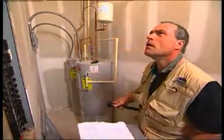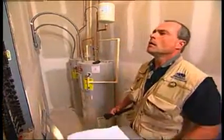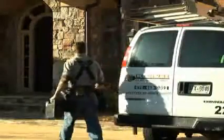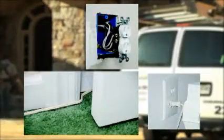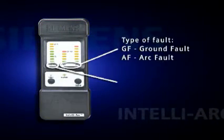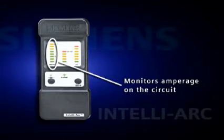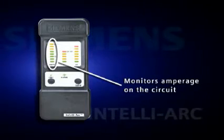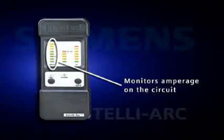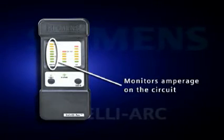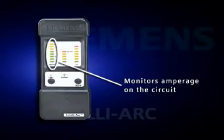Arc faults are often intermittent, which can make troubleshooting a branch circuit very difficult. In these cases, it is important to determine whether the fault condition exists in the permanent wiring, in connected equipment, or in a power cord. The IntelliArc Diagnostic Tool presents information as to the type and magnitude of fault. Since the fault may not cause an AFCI to trip for various reasons — for example, the duration is too short or current level is too low — the tool provides an indication showing how close an event is to causing an AFCI to trip.